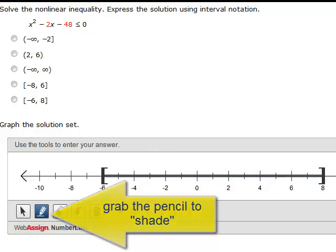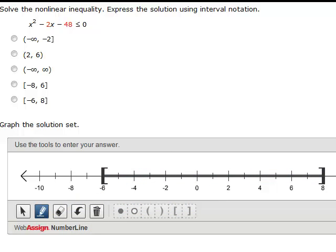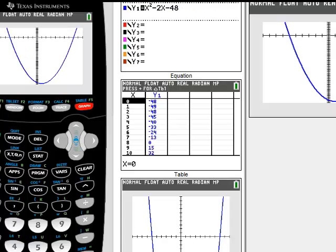Because I wanted the part of my parabola that was less than or equal to. That means the y's are negative below the x-axis. And when I looked at my graph, the part of my parabola that is below is between negative 6 and 8.